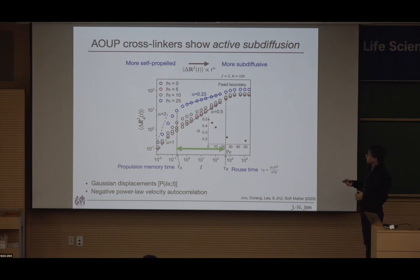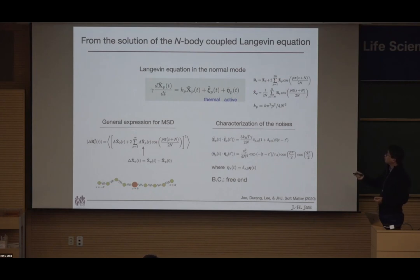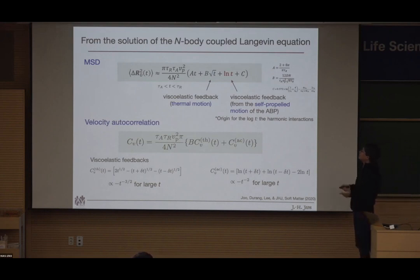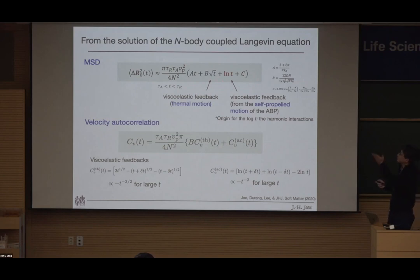After simplifying, the MSD is surprisingly given by two terms. The first term, proportional to sqrt(T), comes from thermal motion with Rouse feedback giving exponent one-half. Surprisingly, there is an additional term proportional to log(T), which comes from the self-propelled active particle motion. We found this log(T) term is robust: even when changing the Péclet number, boundary conditions, or style of active noise, it persists because of the harmonic spring interaction in the polymer.